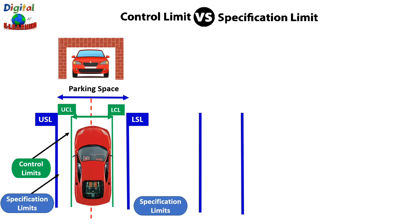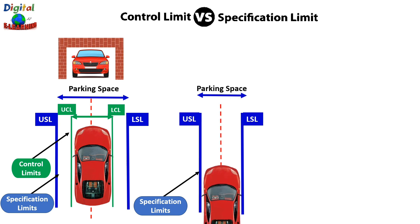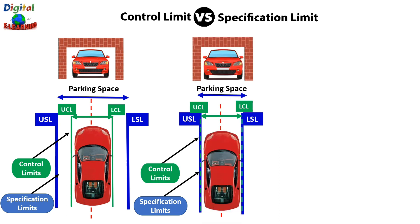Case two: when the specification limit coincides with your upper control limit. In this case, your car will be slightly smaller than the garage, but you can still park it right in the middle of the garage — the center of the specification limit. This is the least probable best-case scenario because you are almost on the edge of the specification limit.